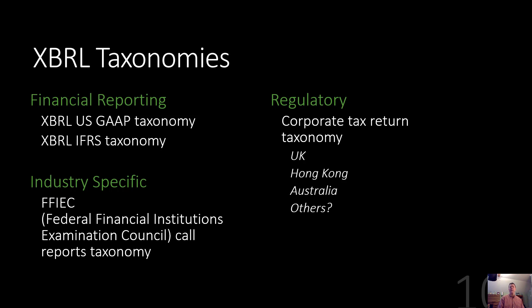There are also XBRL taxonomies for other uses. The financial services industry — FFIEC — requires banks to submit a quarterly call report every quarter, and that is in XBRL using their own specific taxonomy. Other regulatory bodies as well. Those of you in tax may see XBRL sooner rather than later. The UK, Hong Kong, and Australia already require it for corporate filings, and we may see it happen in the U.S. before too long.